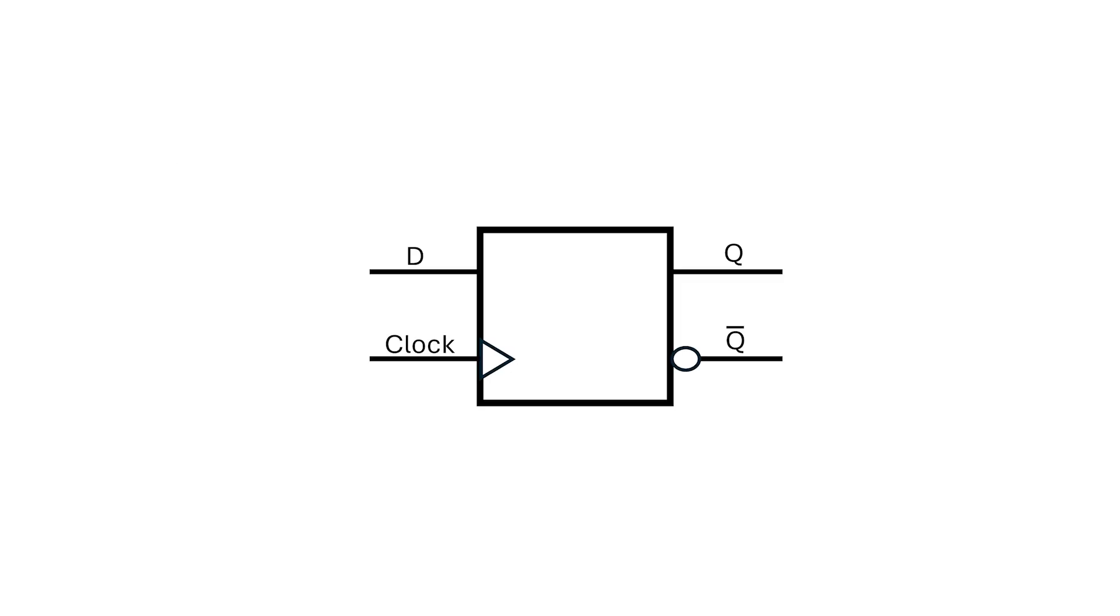We generally draw the D-type flip-flop as a box with data and clock input on the left and we use a little triangle to distinguish the clock input. On the right, we have the Q and Q-bar outputs and we use this little circle on the Q-bar output to specify that it's the inverse, but Q-bar isn't always drawn.